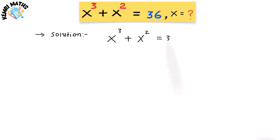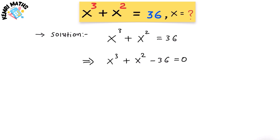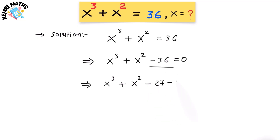Here we have the equation x³ + x² = 36. I'm going to move the 36 from the right-hand side to the left-hand side, so it becomes x³ + x² − 36 = 0. I'm going to rewrite the term −36 as −27 − 9.